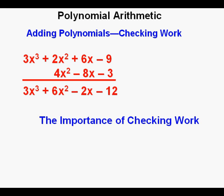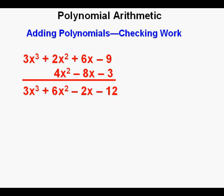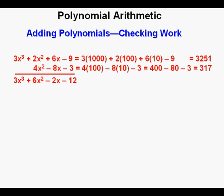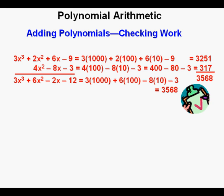Now having added the polynomials, we will check our work—a crucial step we will do whenever possible throughout this and other lessons. I recommend using the number 10 for the variable to check. The number 10 makes the arithmetic easy. So here are the numbers with 10 substituted. These numbers add to 3568. Now we do the same thing with our answer, and that also equals 3568. Check.